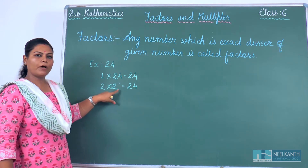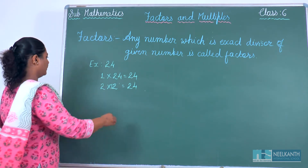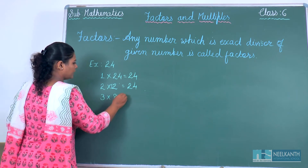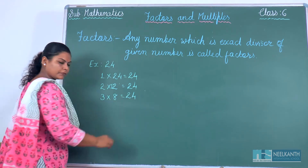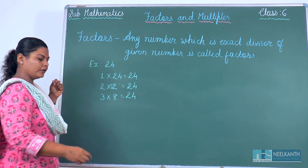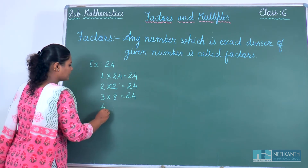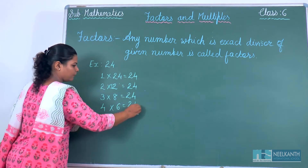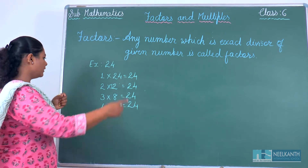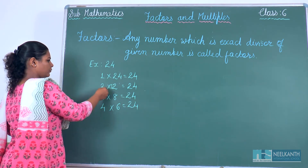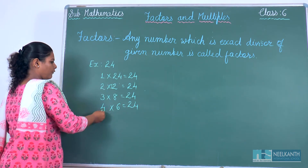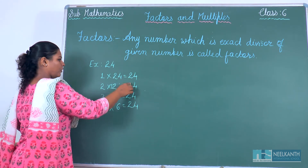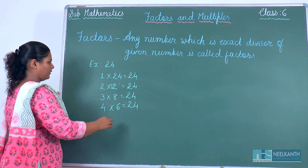2 and 12 are also factors of 24. 3 eights are also 24, so 3 and 8 are factors. 4 sixes are also 24, so 4 and 6 are factors. So all these numbers — 1, 2, 3, 4, 6, 8, 12, and 24 — are the factors of 24.